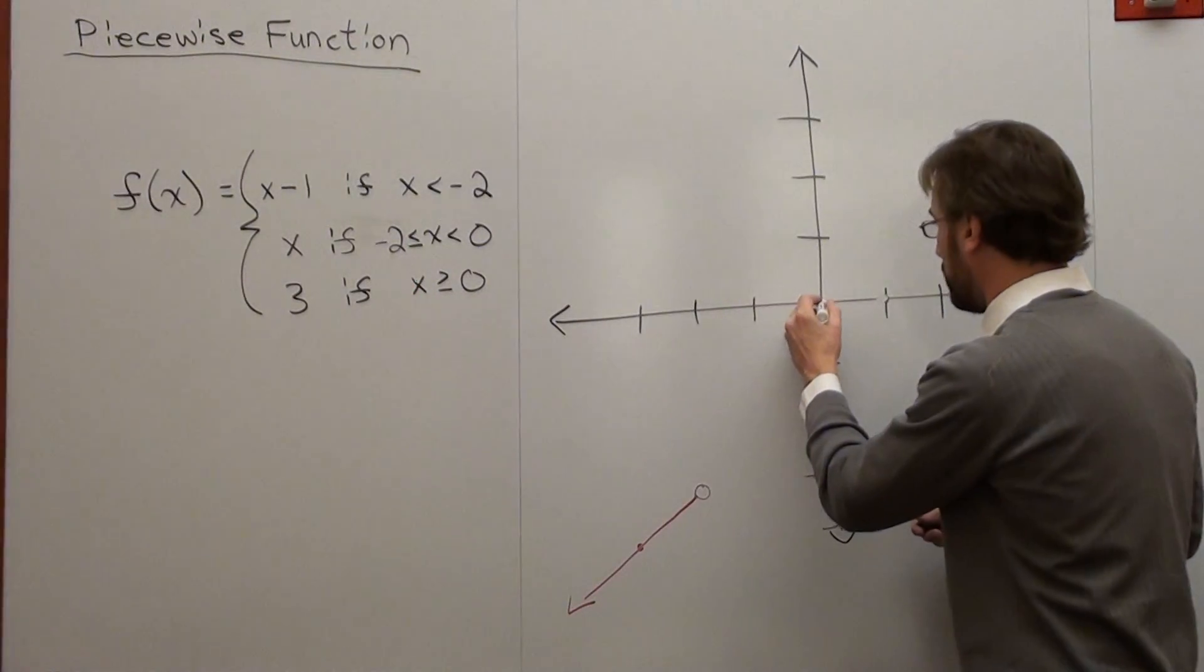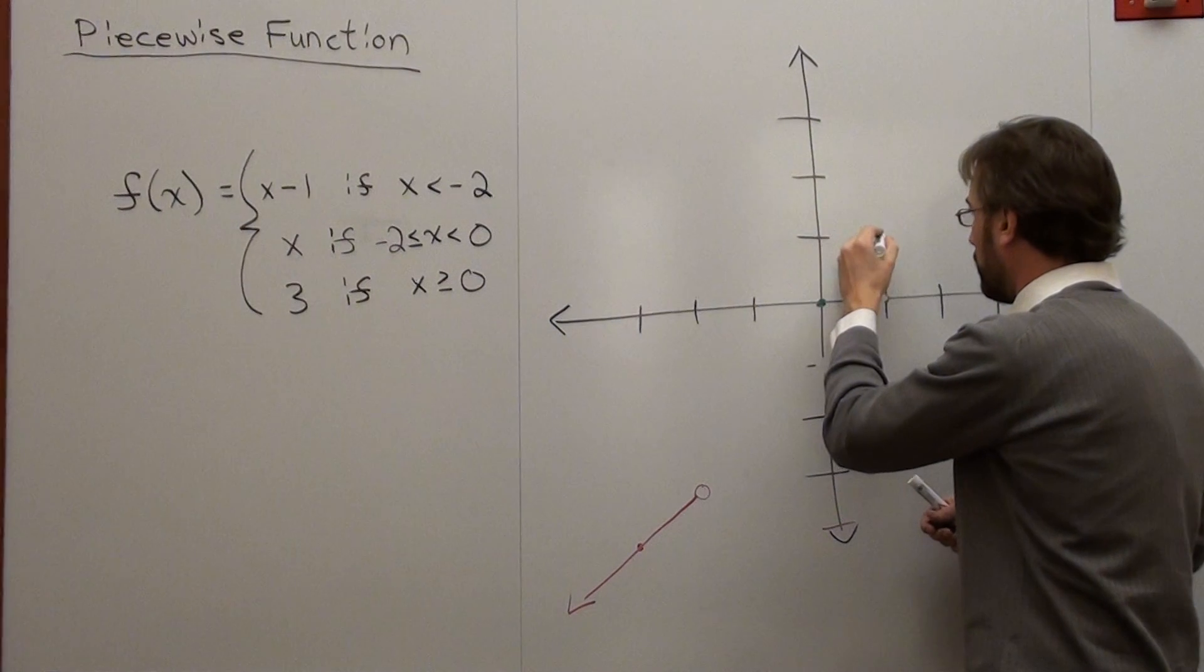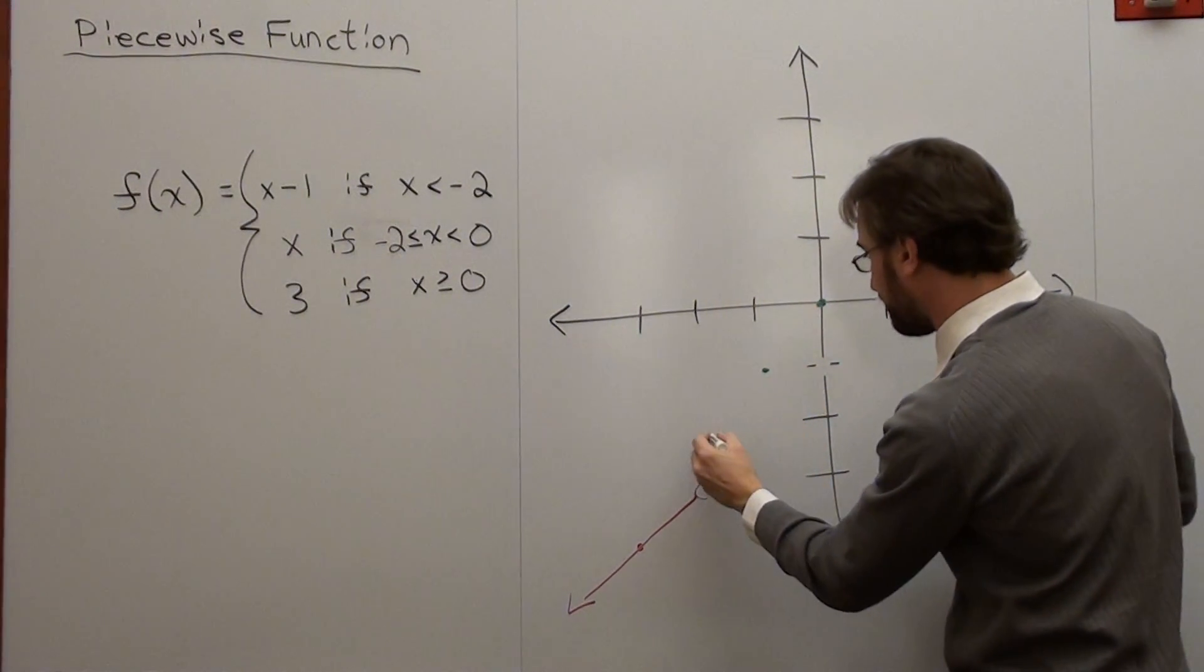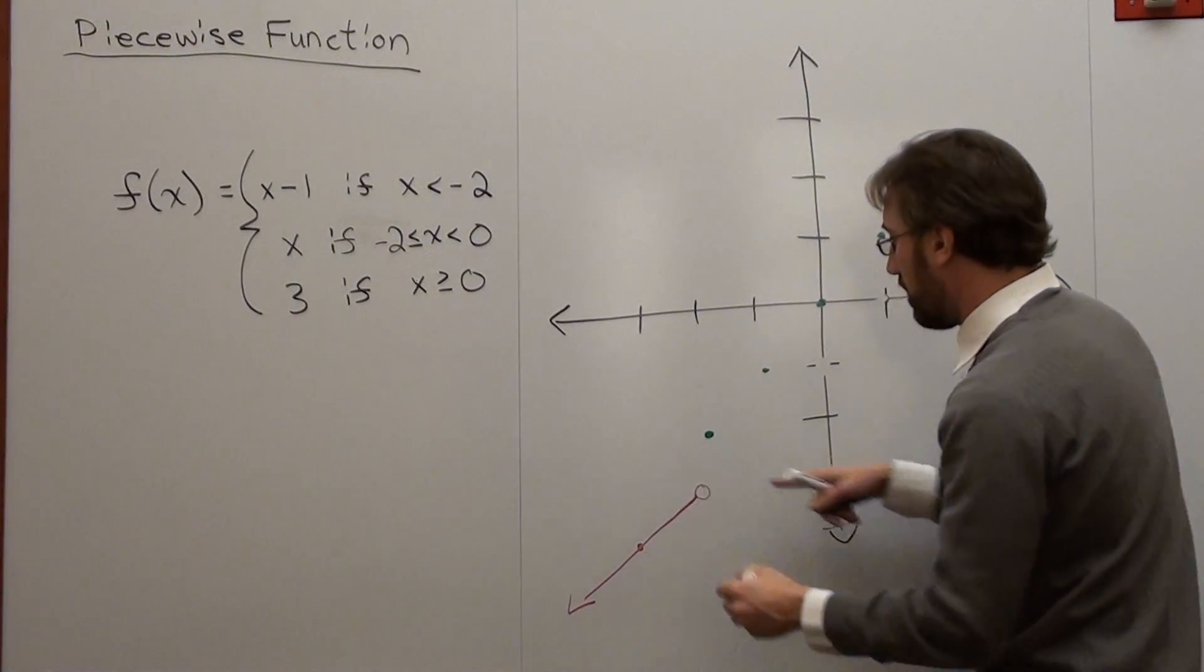Well, the y intercept is at 0, and it goes up 1, over 1, down 1, over 1, so on and so forth. Well, here's what happens.